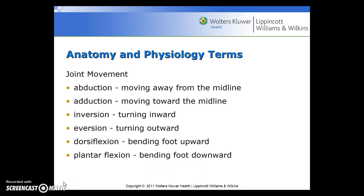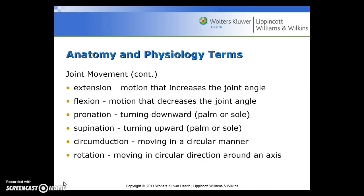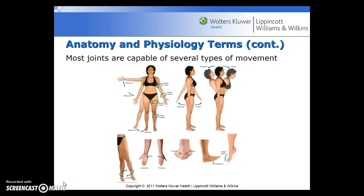Joint movement — terms you'll need to become familiar with: abduction, moving away from the midline; adduction, moving towards the midline; inversion, turning inward; eversion, turning outward; dorsiflexion, bending your foot upward; plantar flexion, bending the foot downward. Extension is a motion that increases the joint angle. Flexion is a motion that decreases the joint angle. Pronation is turning downward, usually referred to for a palm or sole. Supination is turning upward for a palm or sole. Circumduction is moving in a circular manner. Rotation is moving in a circular direction around an axis. Here you can see a diagram showing some of those types of movements.